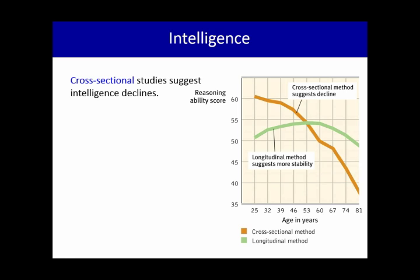In the cross-sectional method, if we look at the x-axis, we've got different groups of people in each of those age groups. So you have a group of 25 year olds, a group of 32 year olds, a group of 39 year olds, and so on up to a group of 81 year olds. Each age group consists of different people.